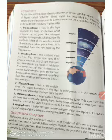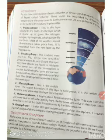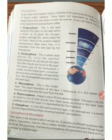The geosphere is the dry land which we live on. It consists of different landforms like plains, mountains, ice land, hills, and valleys. Human, animal, and plant life are all found on the land.